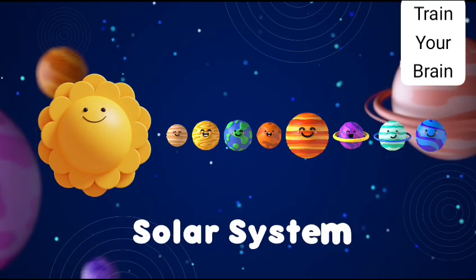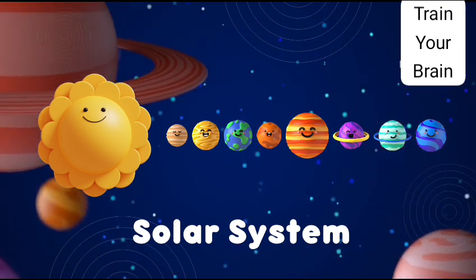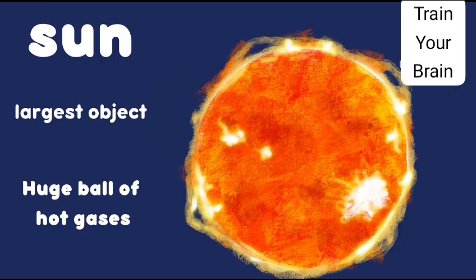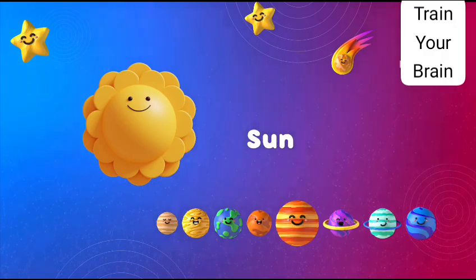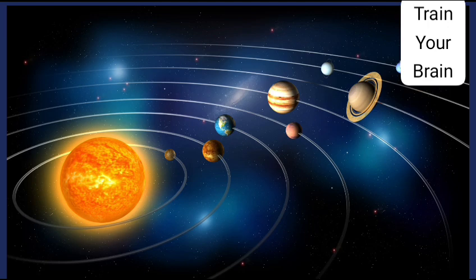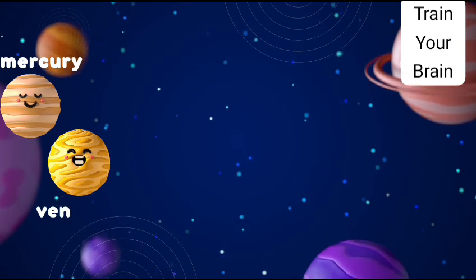The solar system is made up of the sun and everything that travels around it. At the center of the solar system is a star called the sun. It is the largest object in the solar system. The sun is a huge ball of very hot gases. It is so hot that you can feel the heat from it on Earth, millions of miles away. Living things on Earth depend on this energy in the form of light and heat. After the sun, the largest objects in the solar system are the planets.